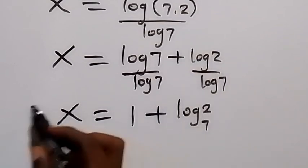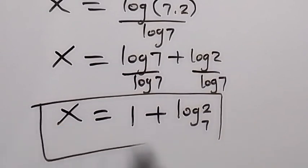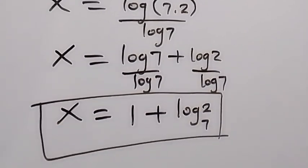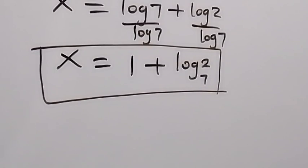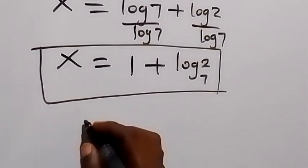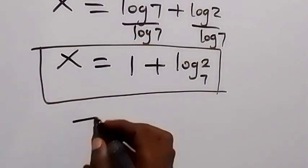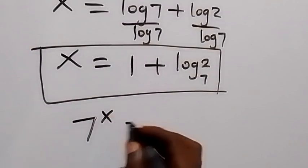Using the second method, we have 7^x equals 14. Now we can take log base 7 on both sides.